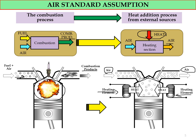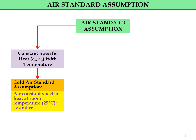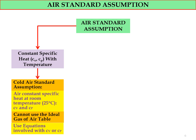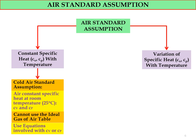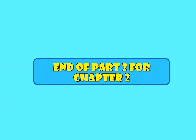In the air standard assumption analysis, there are two types. First, the cold air standard assumption, which uses constant specific heats cp and cv at room temperature of 25 degrees Celsius. For this case, we cannot use the ideal gas air table — we must use equations involving cp and cv. Second, the standard air assumption uses variation of specific heat cp and cv with respect to temperature, and for this case we can use the ideal gas air table but cannot use equations involving cp or cv.